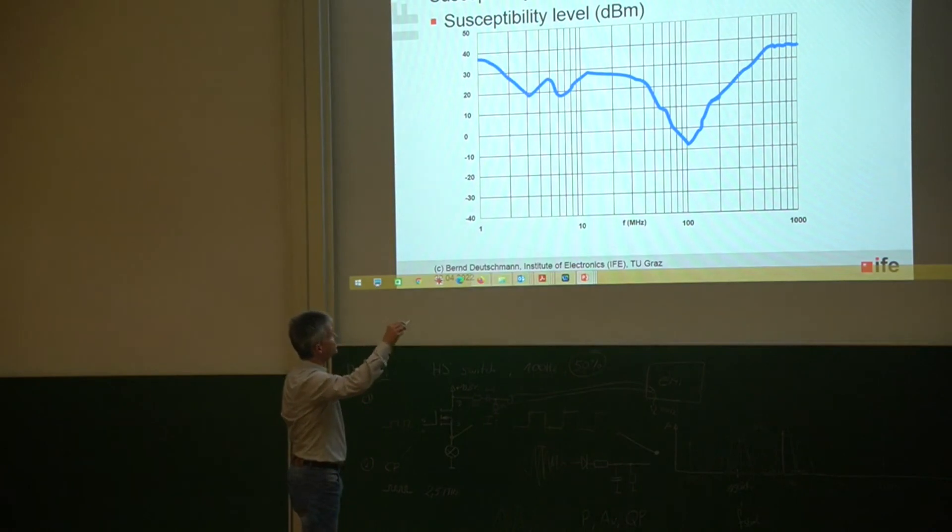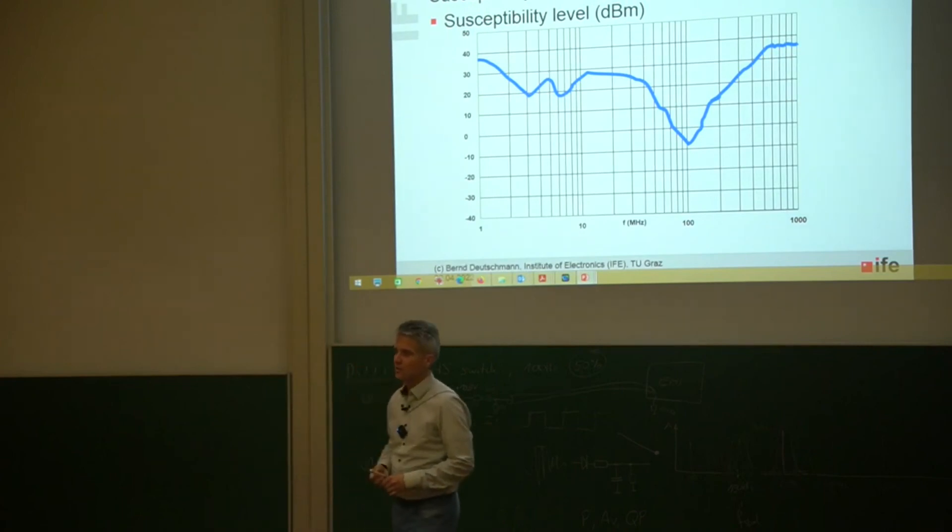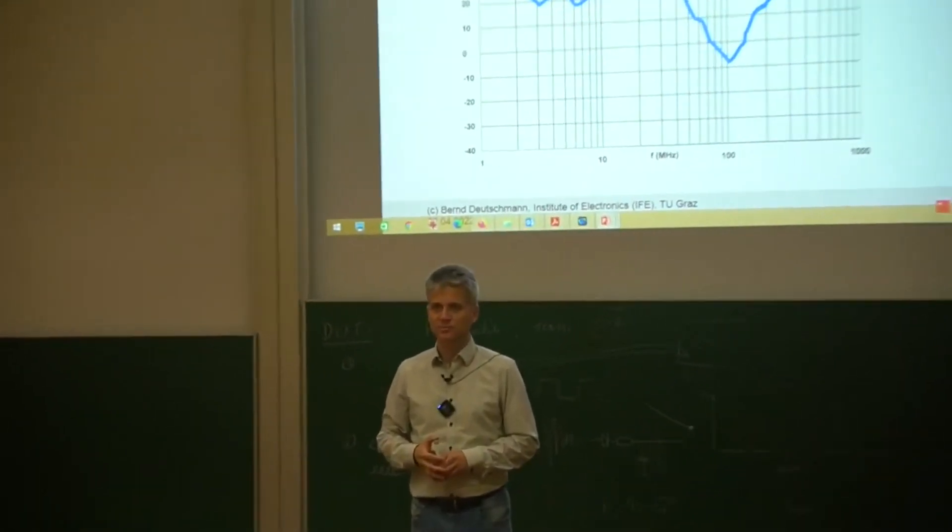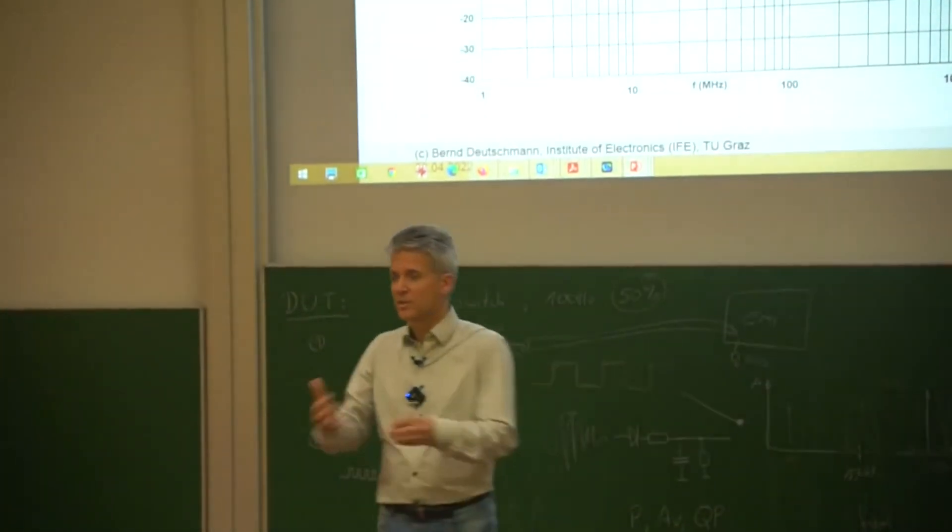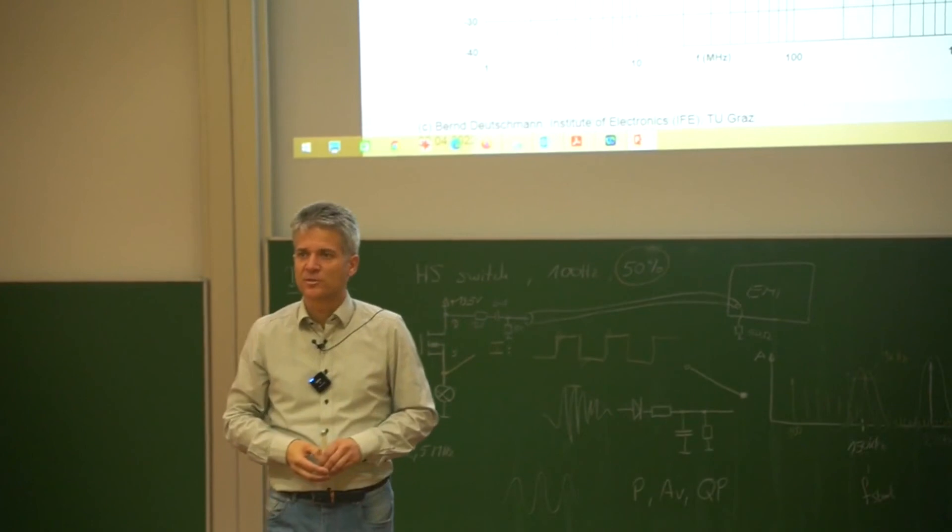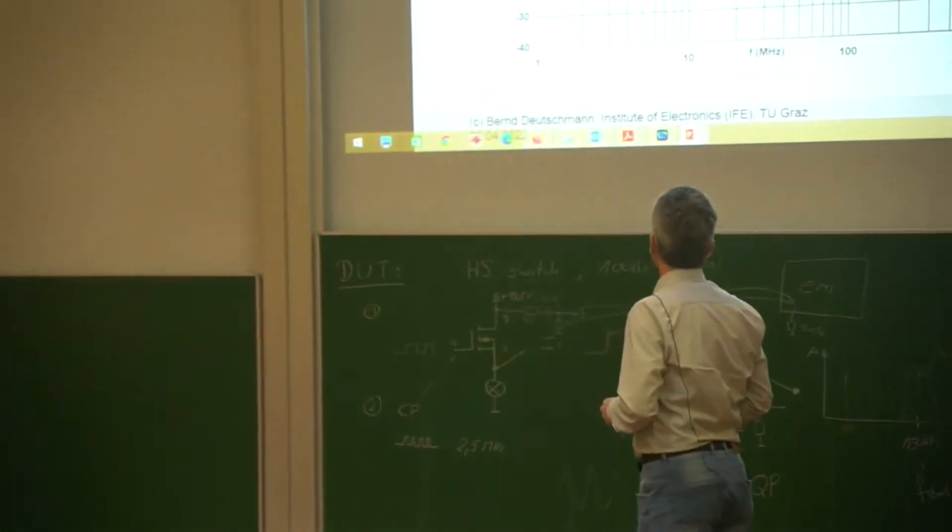So we get over the whole frequency range a characteristic and we can see that our operational amplifier at 100 hertz is not very susceptible. This is exactly the information that you would need when you are designing an electronic system because you know that at a certain frequency my IC might have some problems. This is the information that you should ask from the IC manufacturers so that they can give you some further information on the susceptibility of your IC.